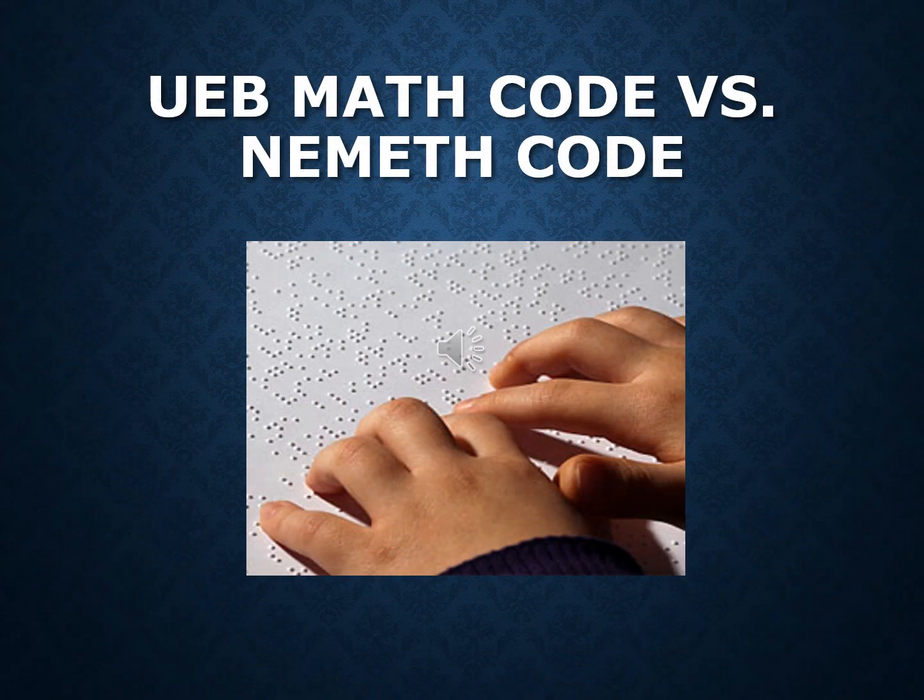Hey everyone. Welcome back to my channel. Today we're diving into a topic that's super important for Braille users, educators, and anyone involved in the world of accessible education. We're going to compare the UEB math code and the Nemeth code. These are two systems used for transcribing mathematical content in Braille, and each has its unique features, advantages, and challenges. So let's get started.